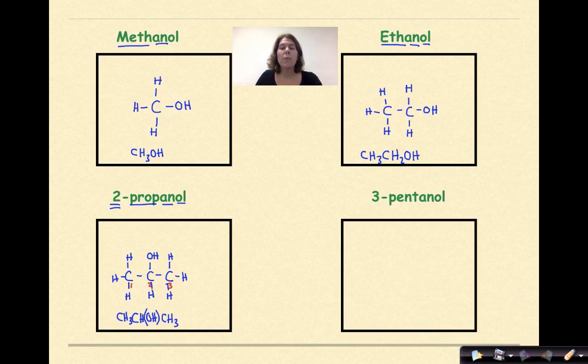Let's do 3-pentanol. Pent means 5 carbons. 1, 2, 3, 4, 5. Single bonds between all the carbons. And yes, we're going to have an alcohol group and it's going to come off the third carbon. I'm not going to number the carbons this time. We can just count. 1, 2, 3. It's going to come off the very center. Here's my OH group. And then I'm going to put bonds and hydrogens around the remaining carbons.